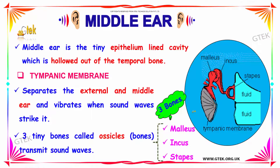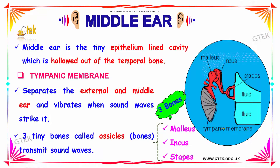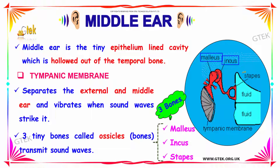The middle ear is the tiny epithelium-lined cavity hollowed out by the temporal bone. Your tympanic membrane, known as your eardrum, separates your internal and external ear. It vibrates when sound waves strike it, and the vibrations are carried to the fluid by three tiny bones known as ossicles: malleus, incus, and stapes. These three ossicles transmit the sound waves to the inner ear.